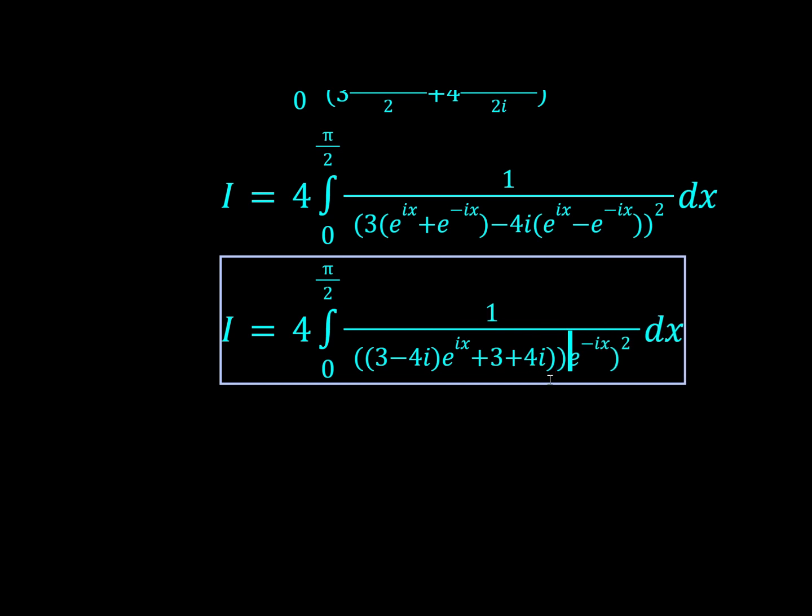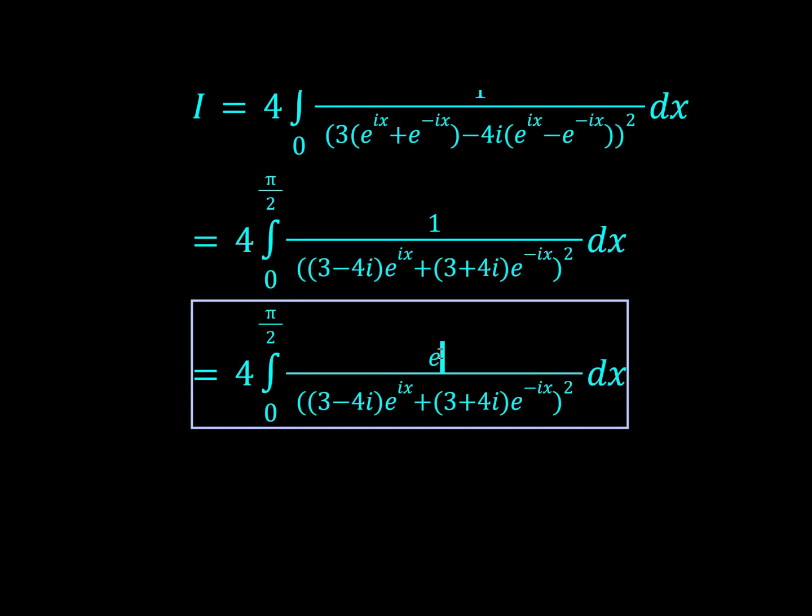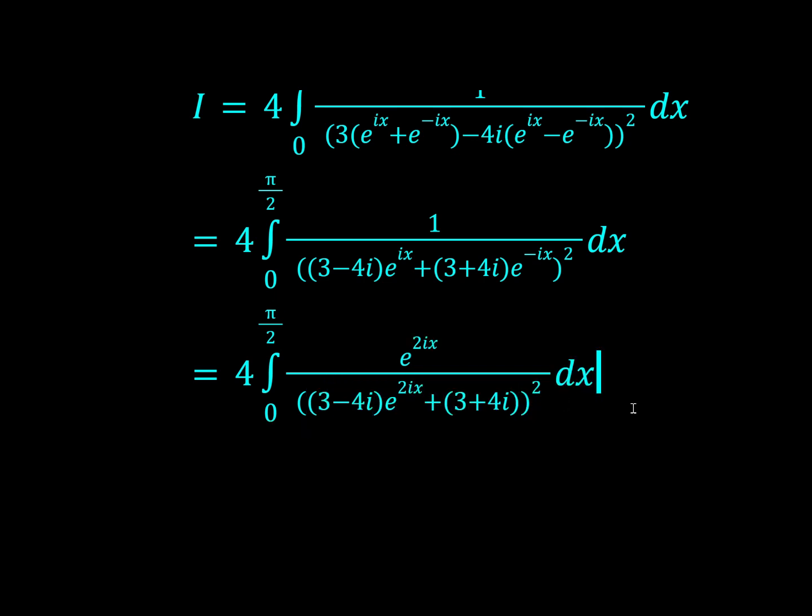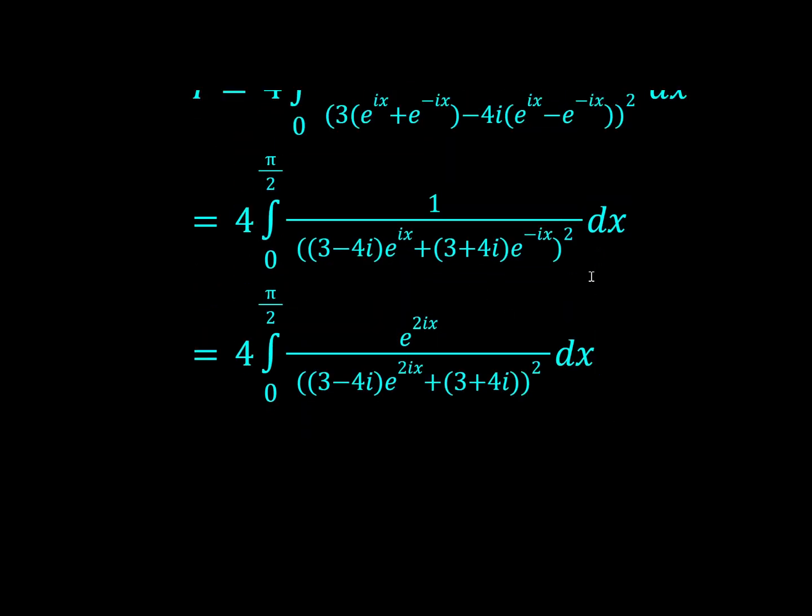Now we kind of want to remove this e^(-ix). We don't really like negative exponents in this case. So we'll multiply everything by e^(2ix). And e^(2ix) is just e^(ix) all squared. That's good because now we can take this e^(ix) inside this square and multiply out.